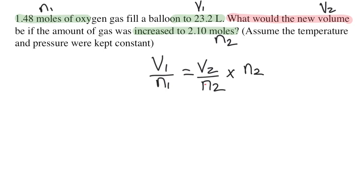Whatever I do to this side of the equals sign, I have to do to the other side. So my equation will become V1 times N2 over N1 equals V2.